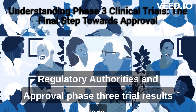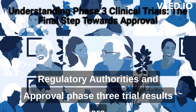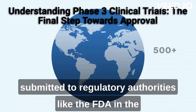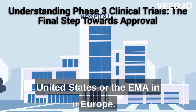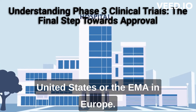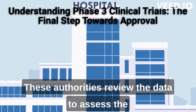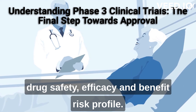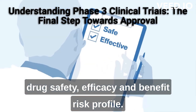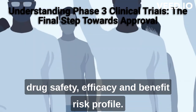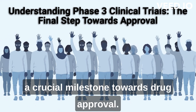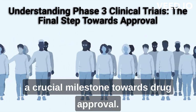Regulatory authorities and approval: Phase 3 trial results are submitted to regulatory authorities like the FDA in the United States, or the EMA in Europe. These authorities review the data to assess the drug's safety, efficacy, and benefit-risk profile. Positive Phase 3 trial results are often a crucial milestone towards drug approval.